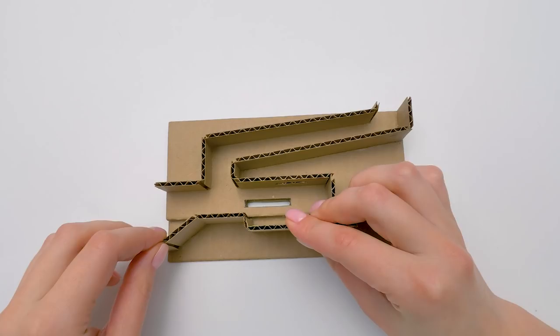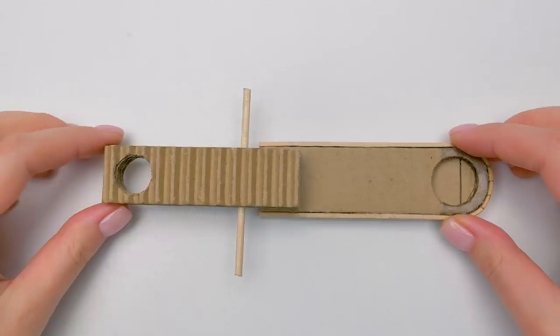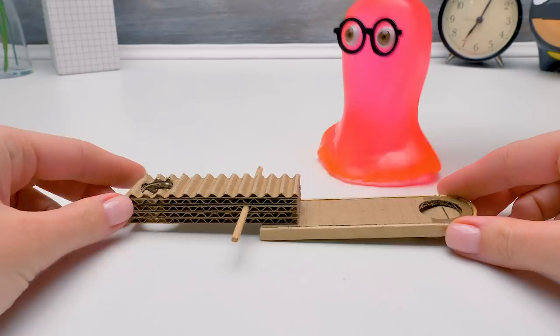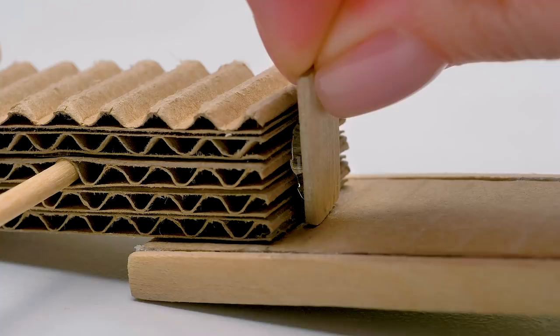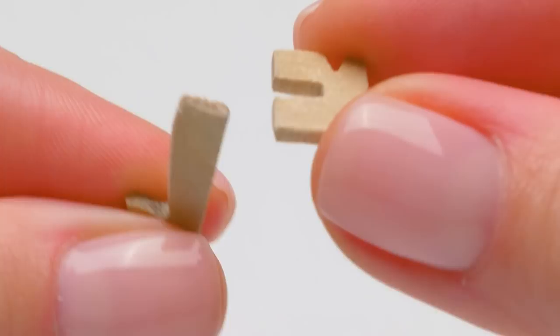Now we need to make the main mechanism of our construction. It will push out the gumballs. Pay attention that we removed the upper cardboard layer here. It reminds me of a swing for two. Let's call it a swing for cash back. We also have some wooden parts. Let's glue them together as well. Very carefully.